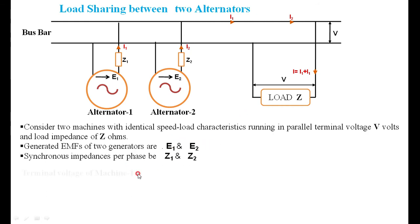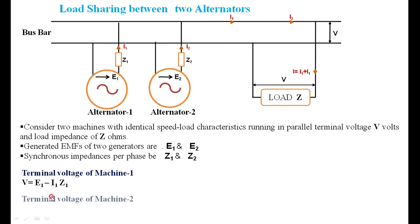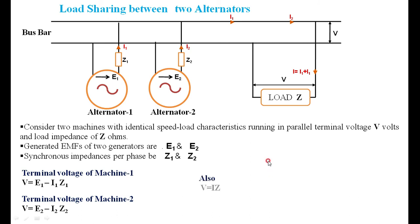E1 and E2 are the generated voltages, Z1 and Z2 are the synchronous impedances. The terminal voltage V of alternator 1 is E1 minus I1·Z1, and for machine 2, V equals E2 minus I2·Z2. Also, across the load, V equals I·Z_L where Z_L is the load impedance. We know the total current I equals I1 plus I2, and V equals I·Z_L. Therefore the total current I equals V divided by Z_L.